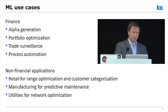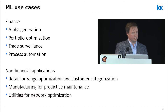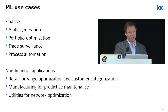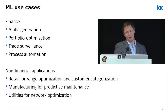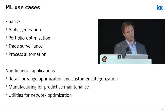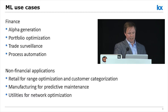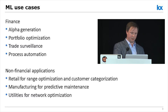In non-financial applications as well, KDB has grown and we've seen machine learning put to great use. In retail, hierarchical clustering of EPOS data has been used for range optimization and categorization of different customers. In manufacturing, sensor data used to train regression and classification algorithms is used in predictive maintenance. And in utilities and telcos, time series data coming off nodes in the network has been used for network optimization.